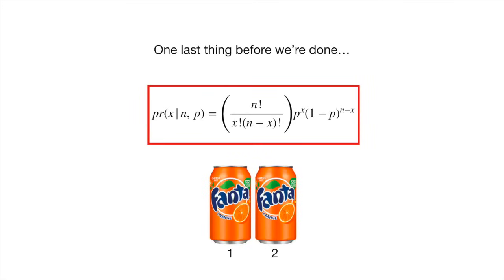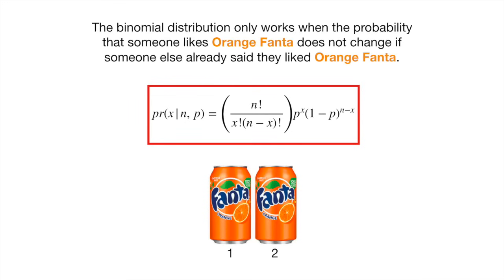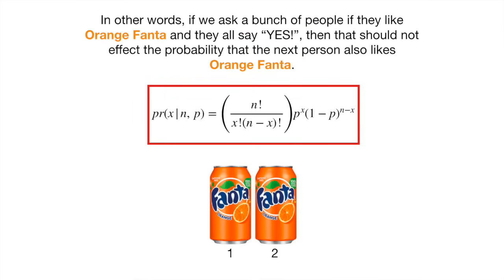One last thing before we're done: the binomial distribution only works when the probability that someone likes orange Fanta does not change if someone else already said they liked orange Fanta. In other words, if we ask a bunch of people if they like orange Fanta and they all say yes, that should not affect the probability that the next person also likes orange Fanta.